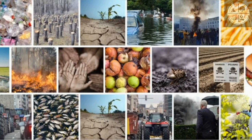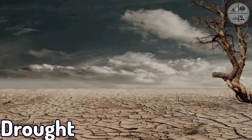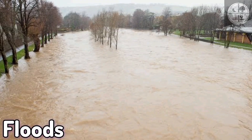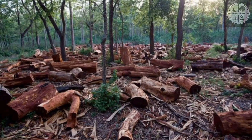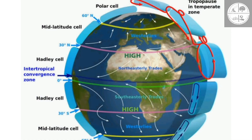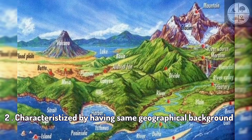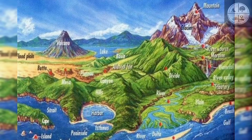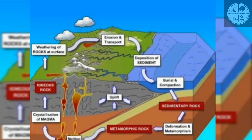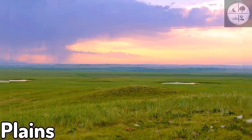Number one: these regions experience similar environmental problems, such as droughts, deforestation, or soil erosion, due to their shared climate and geography. Number two: they are characterized by having the same geographical background — natural regions are shaped by landforms and geological processes such as mountains, plains, or volcanic activity.